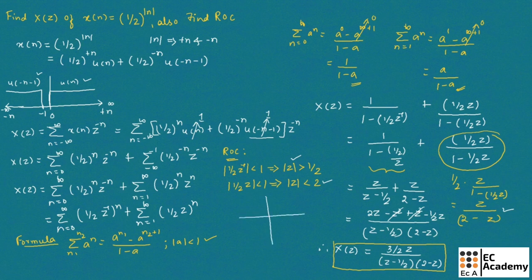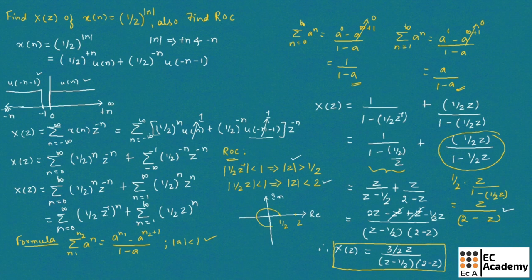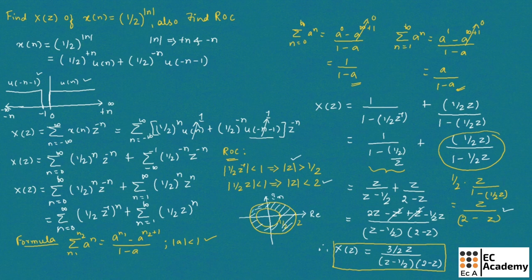Let us consider the Z-plane. On the X-axis we take the real part and on the Y-axis the imaginary part. We mark two points on the X-axis at radius 1 by 2 and radius 2, and draw circles of those radii. Since the ROC is greater than 1 by 2 and less than 2, the ROC is the annular region between these two circles. This is the ROC of the given problem. This concludes Problem 1 on Z-transform. Hope you have understood the topic. Thank you.